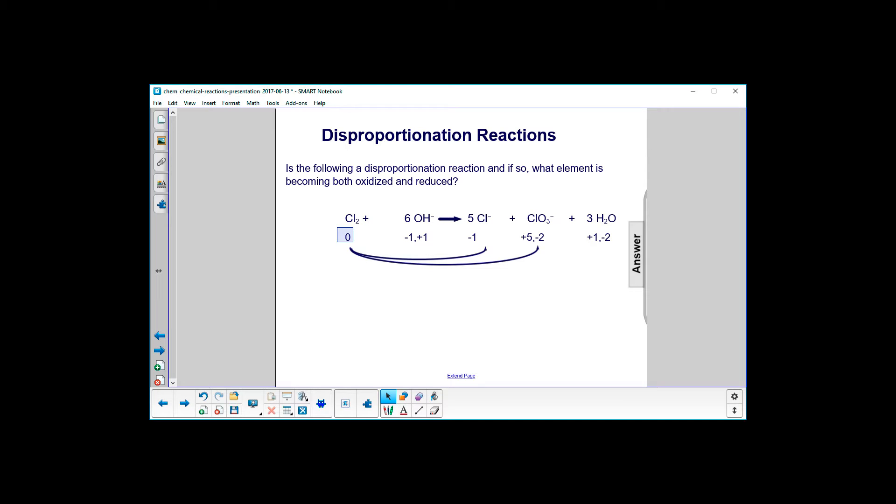So we have chlorine starts out as zero, and over here it goes to negative one, you can see the negative one there telling us the oxidation state, and over here it tells us that chlorine goes to plus five.